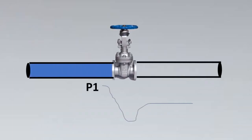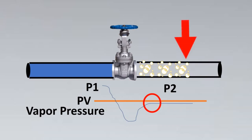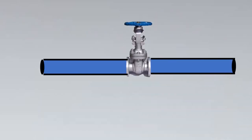The next case is when there is flow to the valve but the pressure downstream does not recover. This happens when the downstream pressure is still below the vapor pressure curve. This phenomenon makes the liquid stay in the vapor phase downstream, and this is called flashing.